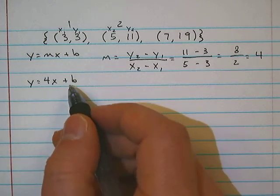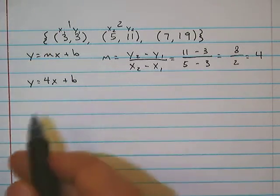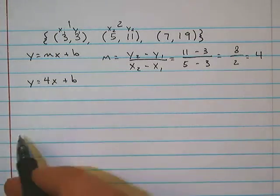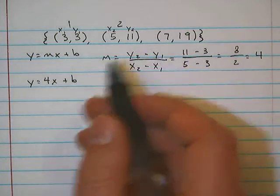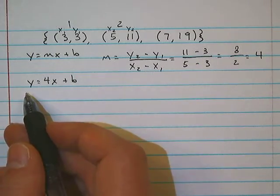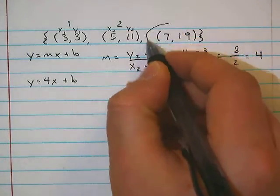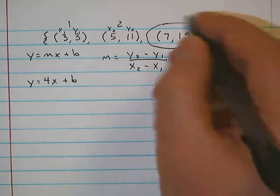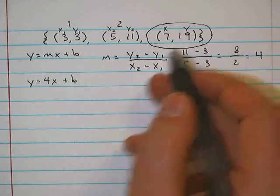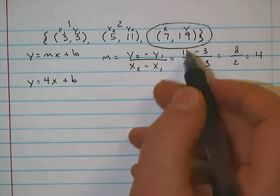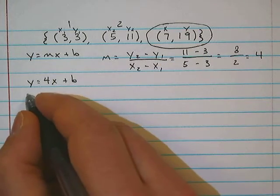Now, in order to find our b value, we're going to pick one point, one entire point, and we're going to take its x value and plug it in for x and its y value and plug it in for y. So I'm going to pick this last point that we haven't messed with yet, 7, 19. This is x and this is y.